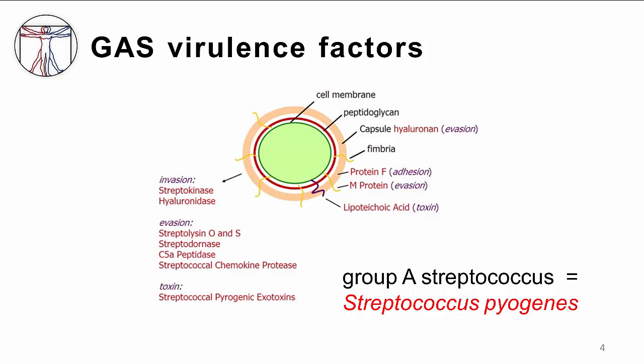Group A strep is also known as Streptococcus pyogenes. The word 'pyon' means pus in ancient Greek. Group A strep has a number of virulence factors that allow it to invade tissues, evade host defenses, and cause a number of suppurative, toxin-mediated, and immunologic processes. Let's discuss just a few of these factors in more detail.